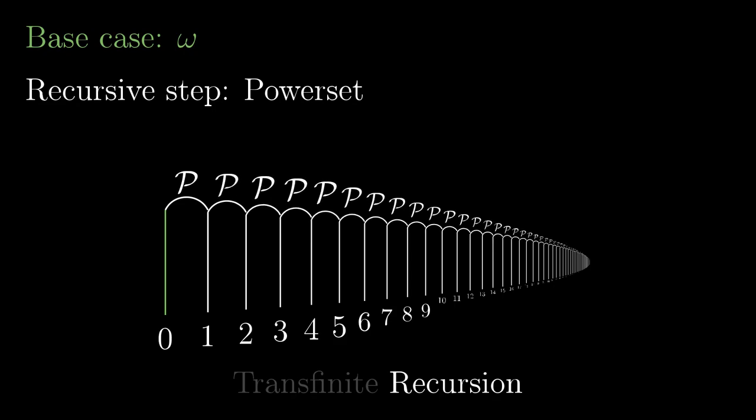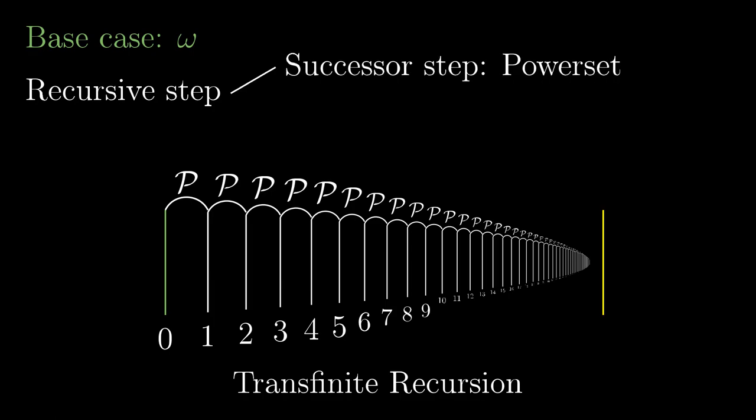But transfinite recursion can do more. It can also combine the data collected in previous steps even if there is no immediately preceding step. So there are two types of recursive steps. The usual one is called the successor step and the one applied if there is no previous value is called the limit step.